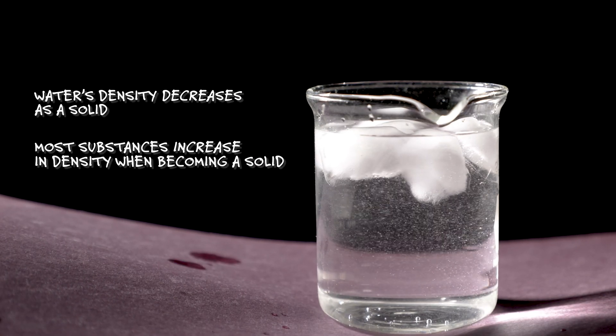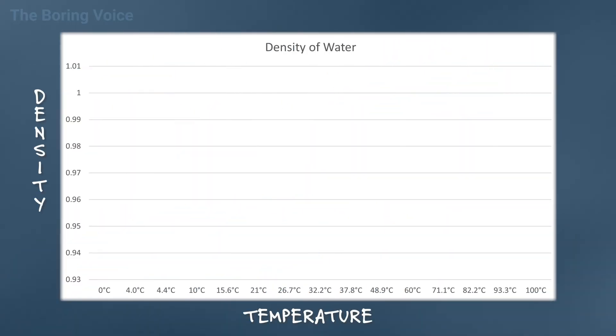That's why ice floats. As the temperature of the liquid water increases, its density decreases slightly. We can actually plot this on a graph.